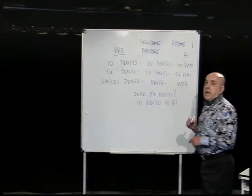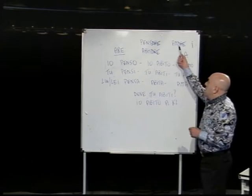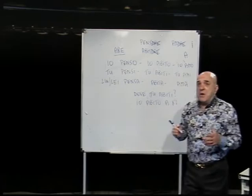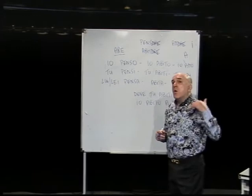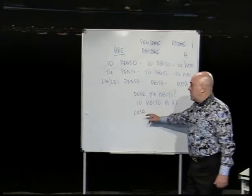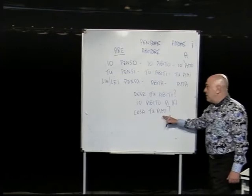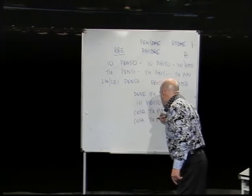If I want to ask 'What do you like?' or 'What don't you like?', for negative questions you just put the word non (N-O-N). Cosa means 'what'. So: cosa tu ami? (What do you like?) And: cosa tu non ami? (What don't you like?)